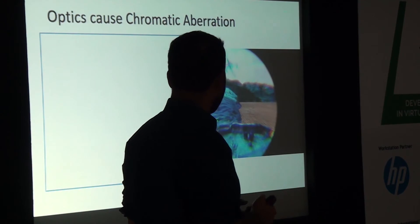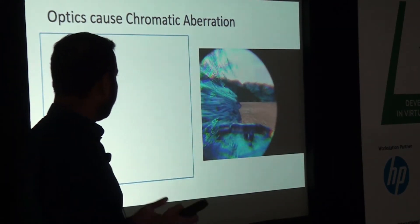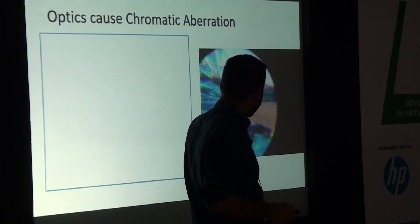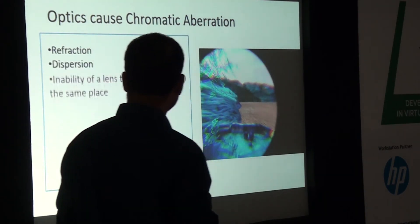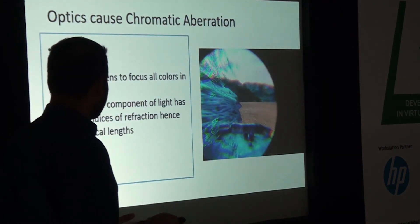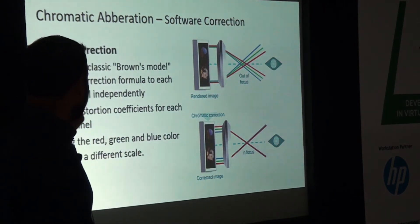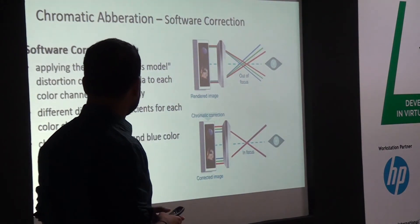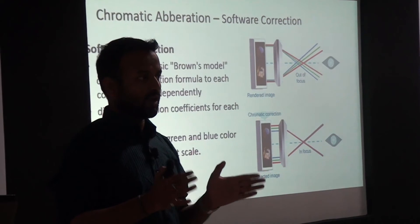Optics also cause chromatic aberration. When light passes through a lens, it disperses based on the wavelength of each color, producing a rainbow-like effect on the edges — that is chromatic aberration, caused by refraction dispersion and the inability of a lens to focus all colors in the same place. Red and blue components of light have different indices of refraction and different focal lengths. The software correction applies the Brown-Conrady distortion correction formula to each color channel independently with different coefficients for each color.